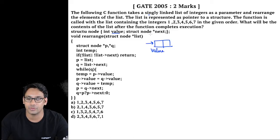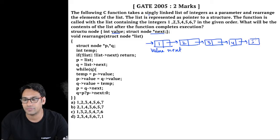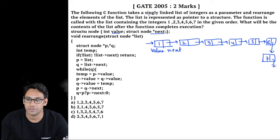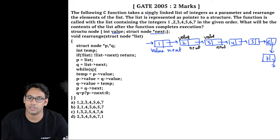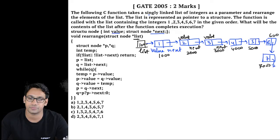In the structure, they have an int value part and a next part. The linked list has data 1 through 7. Let's suppose the address of the first node is 1000, then 2000, 3000, 4000, 5000, 6000, and 7000. All nodes have a value part and a next part. The head pointer, star-list, is initially pointing to the front node at address 1000.